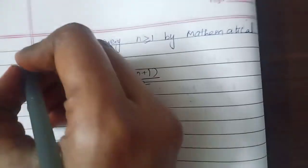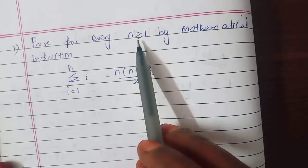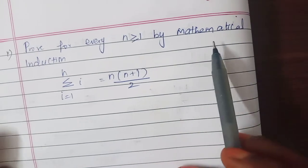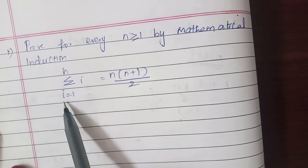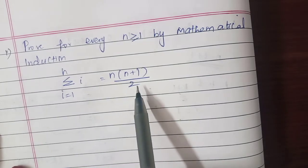So the problem here is proof for every n is greater than or equal to 1 by mathematical induction. Summation i ranges from 1 to n, i equal to n into n plus 1 divided by 2.